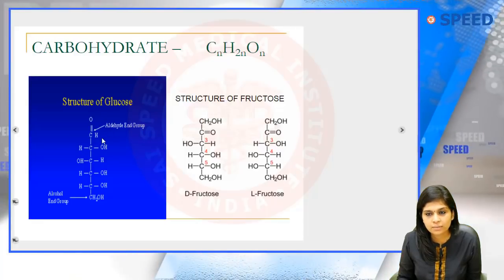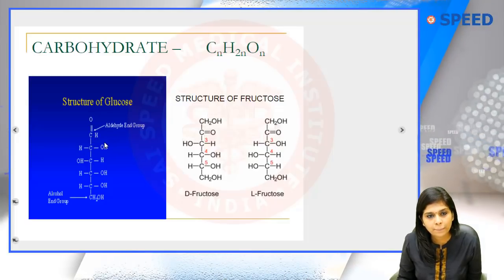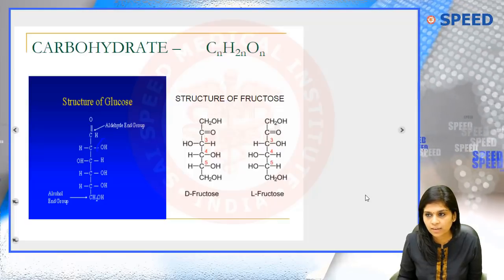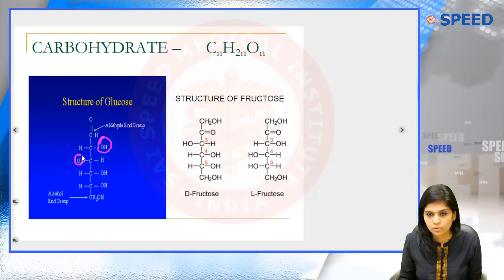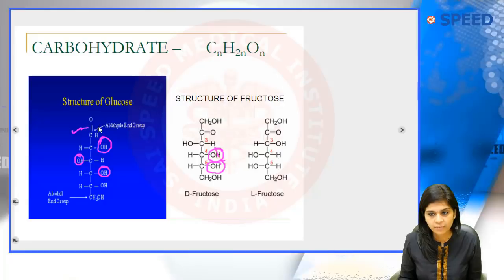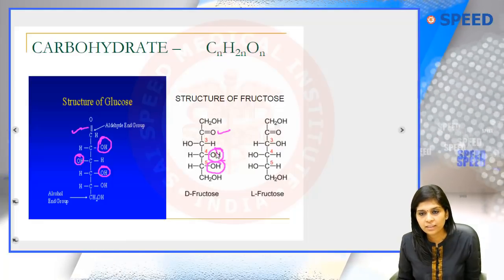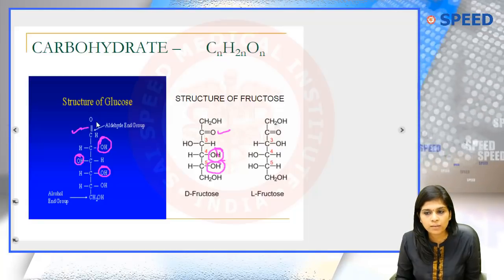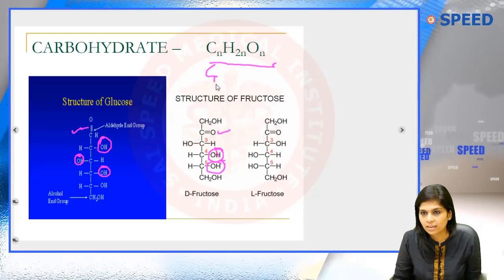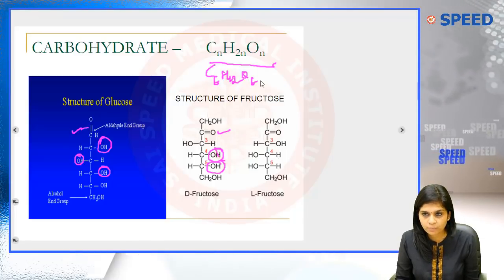Other than both having six carbon atoms, one striking similarity is that both glucose and fructose have multiple hydroxyl groups — that's a similarity you can observe in any carbohydrate. The difference is that glucose has an aldehyde group as its functional group, while fructose has a ketone group. That is why we define carbohydrates as polyhydroxy, because they are bound to have multiple hydroxyl groups. All carbohydrates are polyhydroxy aldoses or ketoses, having the general molecular formula CnH2nOn.